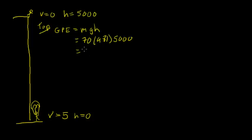So we'll write in the amount: 3,433,500 joules. Down at the bottom, the gravitational potential energy is given by the same formula, but the height is zero, so the gravitational potential energy will just be zero.